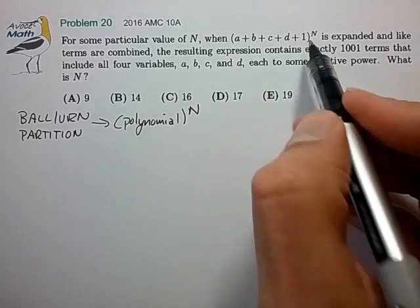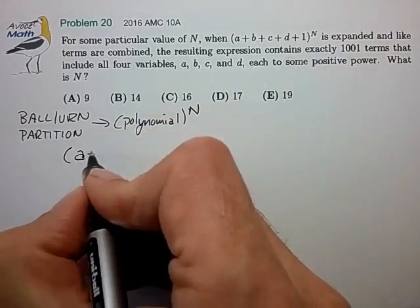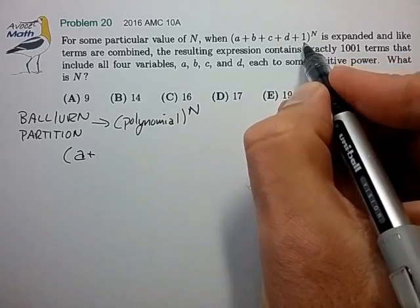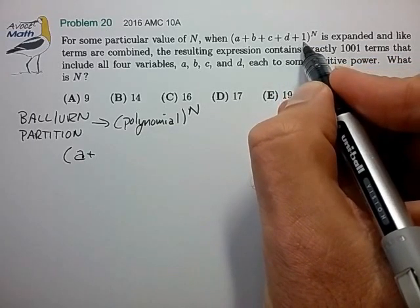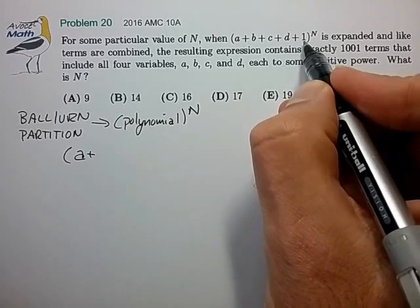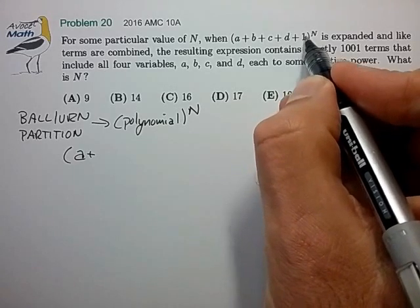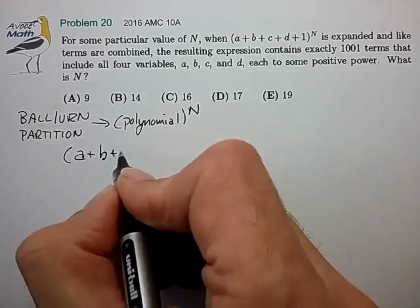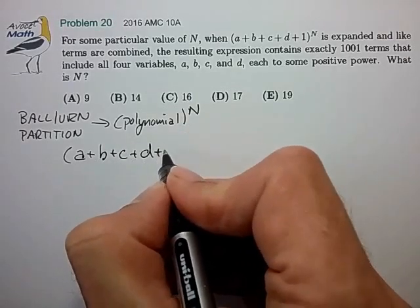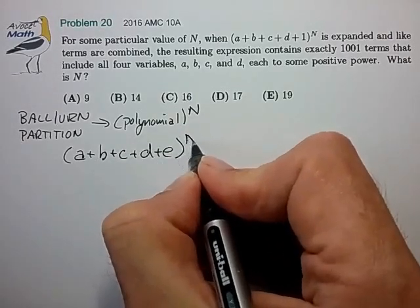So we have this polynomial with this strange feature that it has a 1 and that's what makes it an odd problem. So let's look at a slightly easier problem first where we substitute a variable e for 1 and see how that works to sum power n.